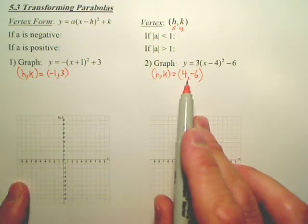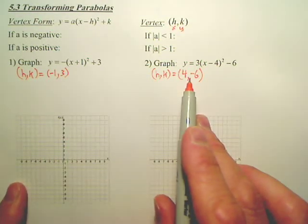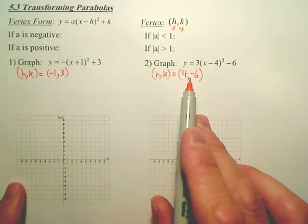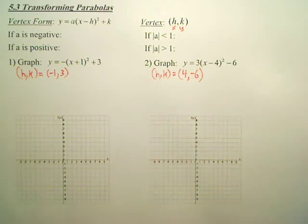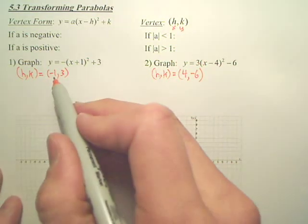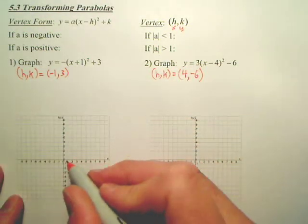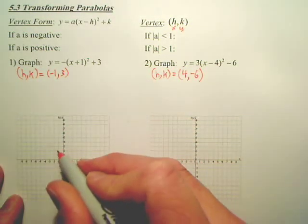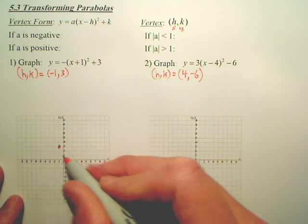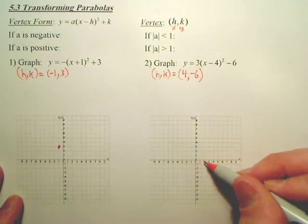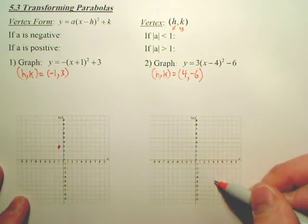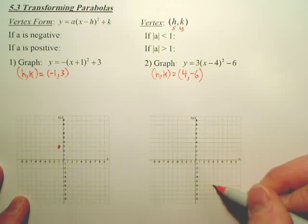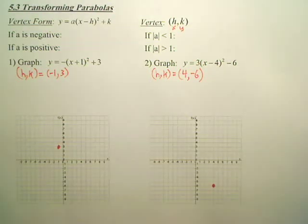Bam, bam. You just look at it, and your vertex is easy. You don't have to do any math. You just look. So, if we plot this point, negative 1, 3. Negative 1, 3. Over here, we're going to plot over 4, down 6. So, we plot those points. That's our first step. We've got the middle of our graph.